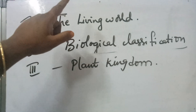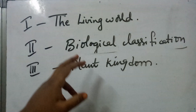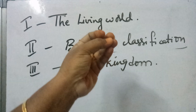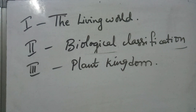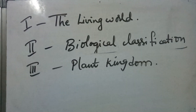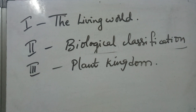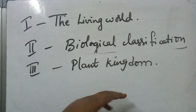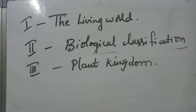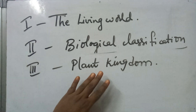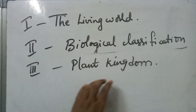After biological classification, we go to Kingdom Plantae in the next chapter. The third chapter in the textbook is 'Plant Kingdom', where we discuss how the plant kingdom is classified and what different groups of plants are present — like algae, fungi, bryophytes, and pteridophytes — their body structure and how they are identified.